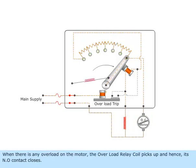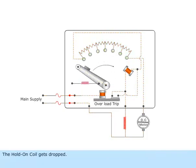When there is any overload on the motor, the overload relay coil picks up and hence its NO contact closes. The hold on coil gets dropped.